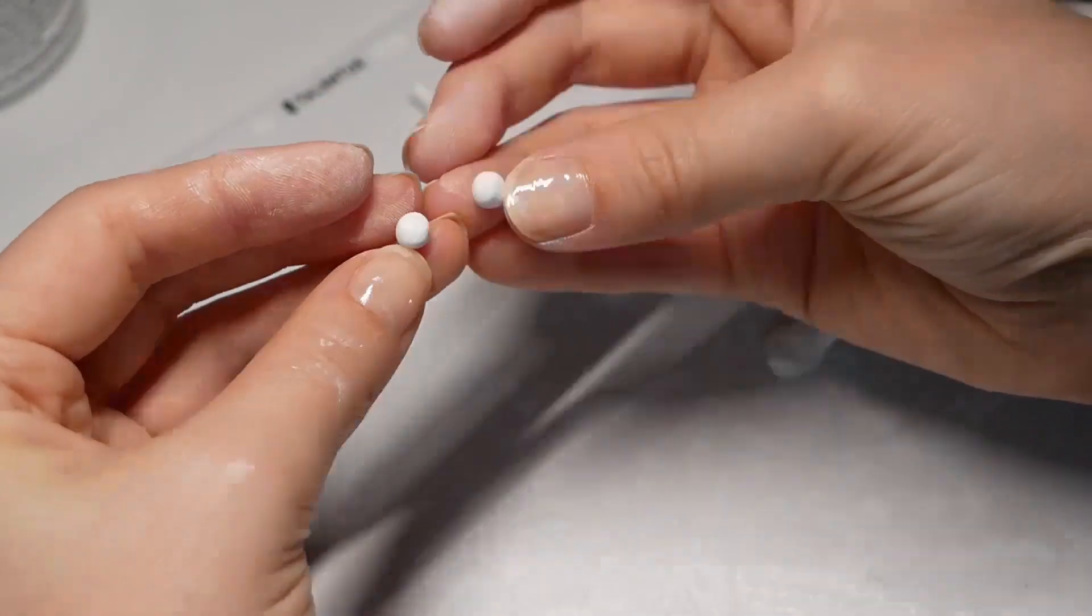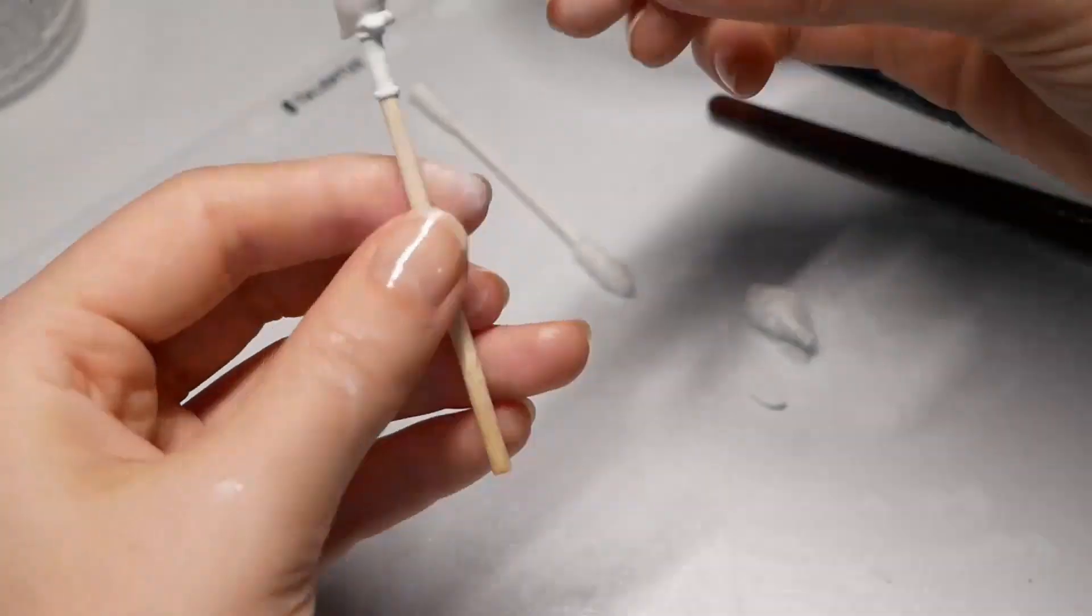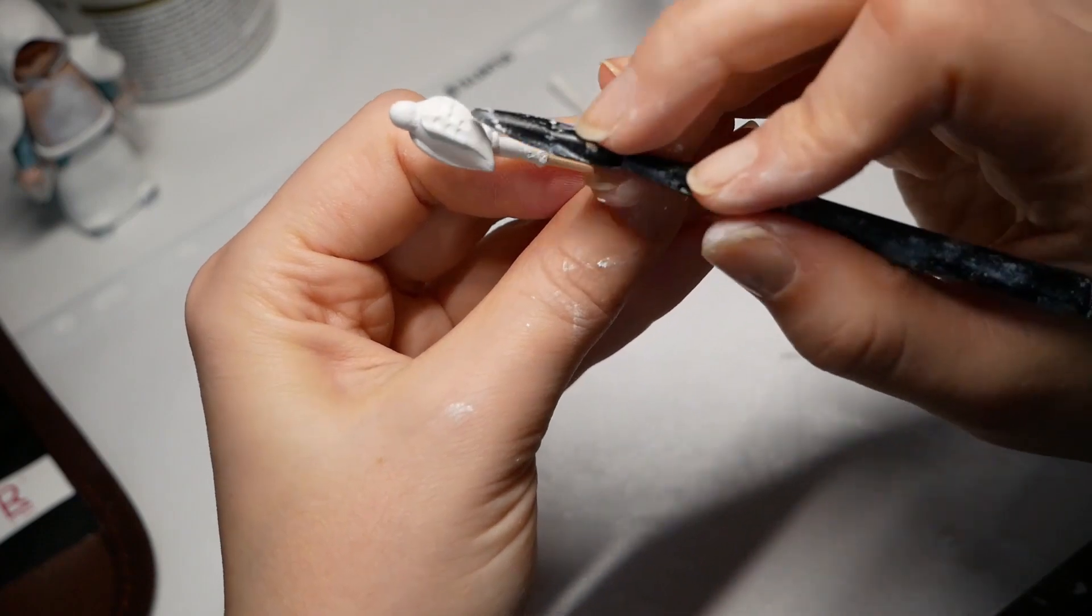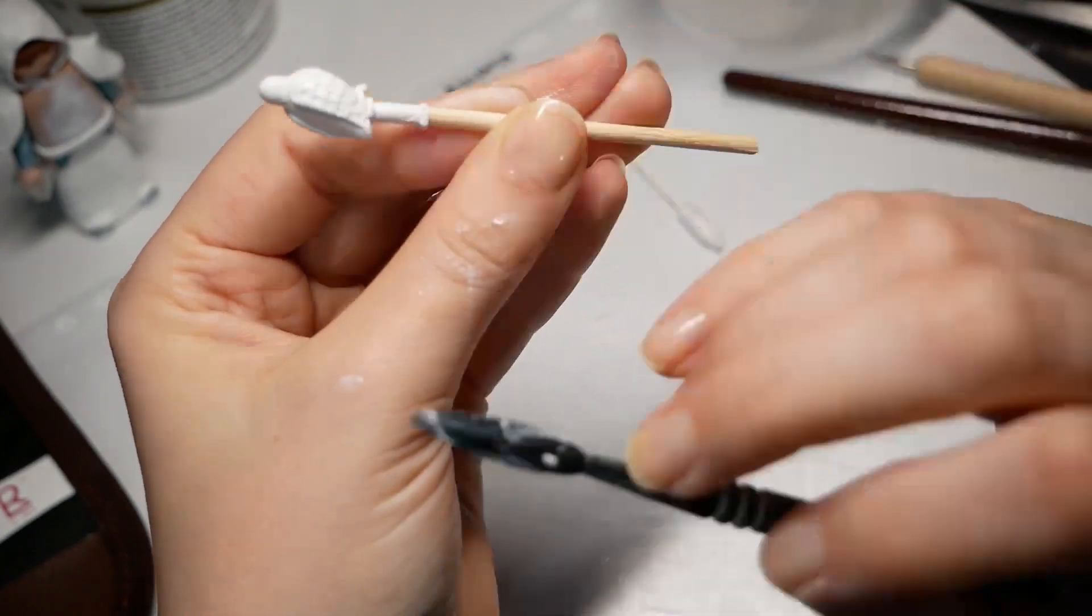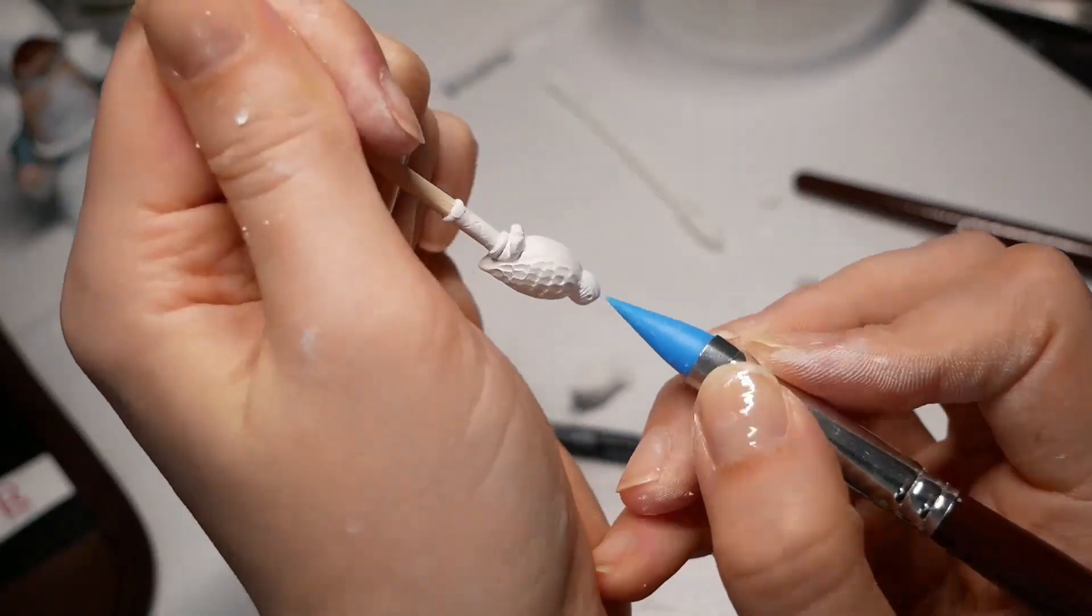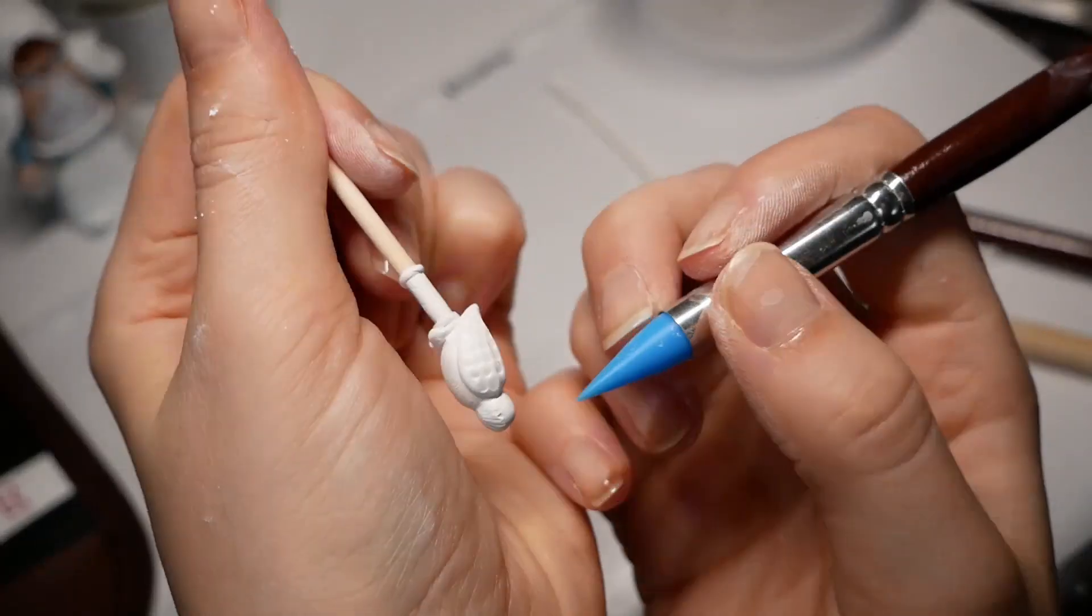And then I made two flat drops for the wings and added feathers using the flat tip of the molding tool. It made the head look too small, so I added some more material to it and added some long feathers with a sharp silicone brush. And then also fixed its beak.